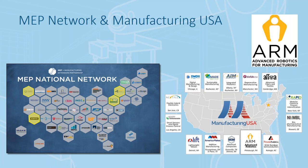Four centers are highlighted — Pennsylvania's Catalyst Connection and CMTC in yellow, along with Impact Washington and Fuse Hub in New York. These centers have been part of a project connecting the MEP network with Manufacturing USA, a network of manufacturing institutes focused on advancing manufacturing technologies. In our case, we've been working with ARM — the Advanced Robotics for Manufacturing Institute — located in Pittsburgh, focused on developing technology and workforce initiatives to drive adoption of robotics and propel U.S. manufacturing forward.